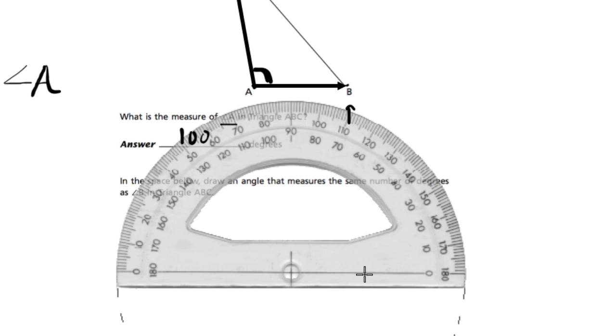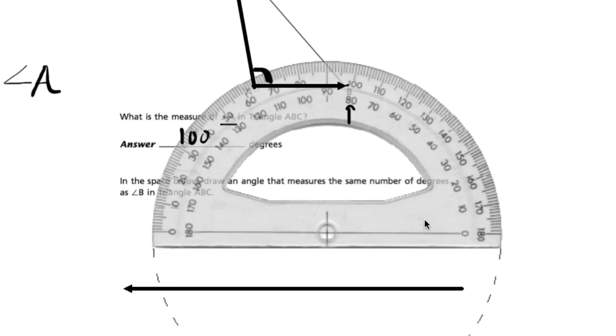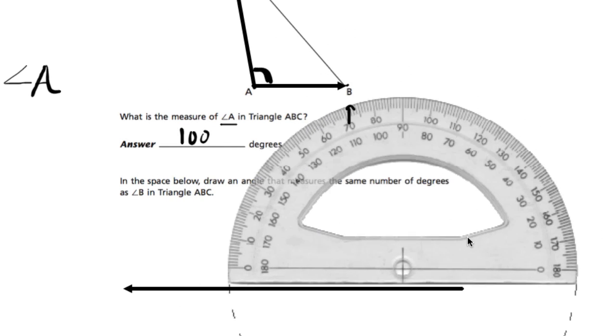An angle is made from two lines. We'll draw the first one. Use the bottom of your protractor as a ruler. Now take your protractor. I would drag it to the end of the line because it's easiest, but you can do it anywhere as long as you mark the point.